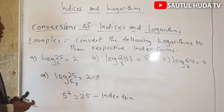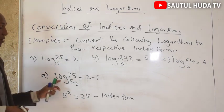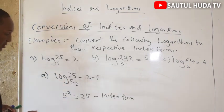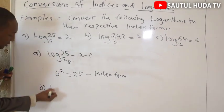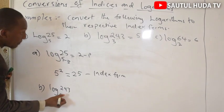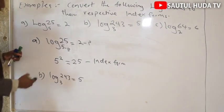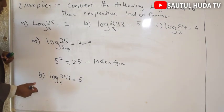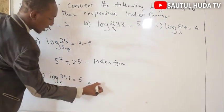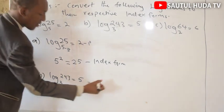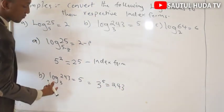Question: Convert the following logarithms to their respective index forms. Example B: log 243 base 3 equals to 5. Converting to index form: base is 3, power is 5, equals to number 243. So 3 power 5 equals to 243.